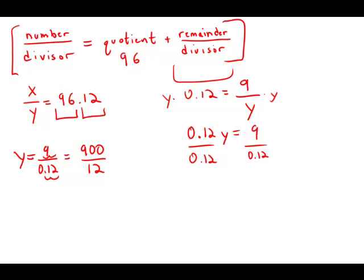We can divide this out. 12 goes into 900. 12 goes into 90 seven times, that's 84, leaving 6. 12 goes into 60 five times.